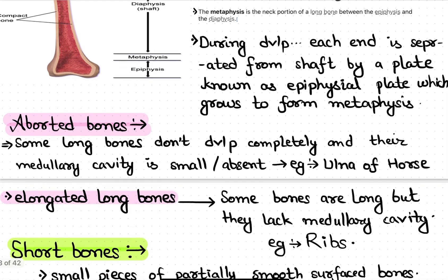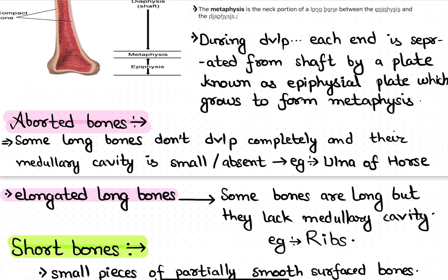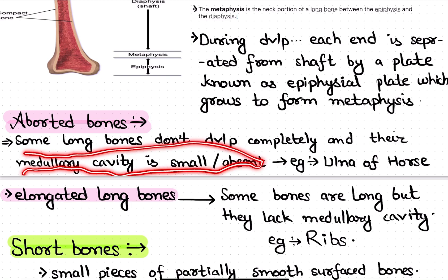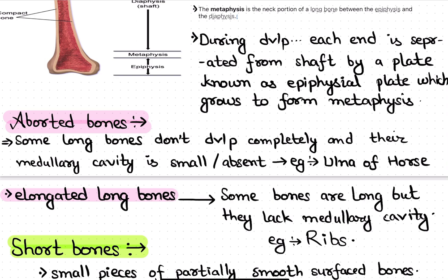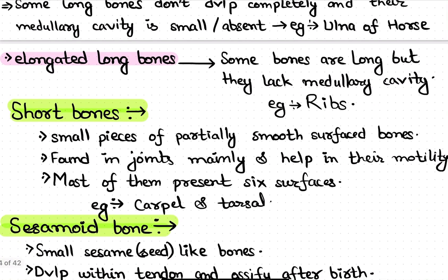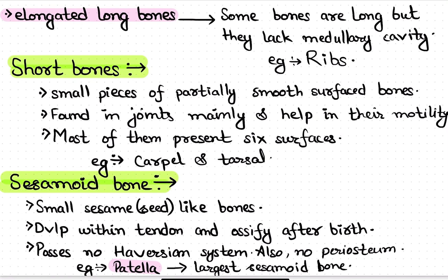Aborted bones are long bones that do not develop completely — for example, the ulna in the horse, which is not completely developed. Their medullary cavity is small or sometimes absent because they are not fully developed. Another type is the elongated long bone, such as the ribs, which are long bones but elongated and lack the medullary cavity.